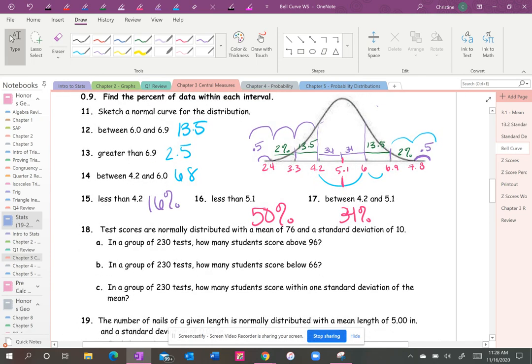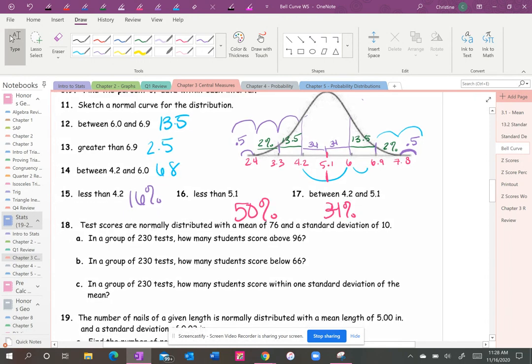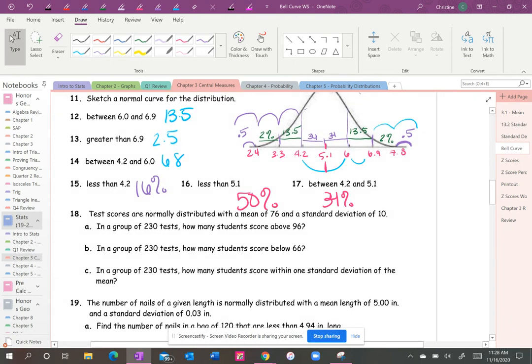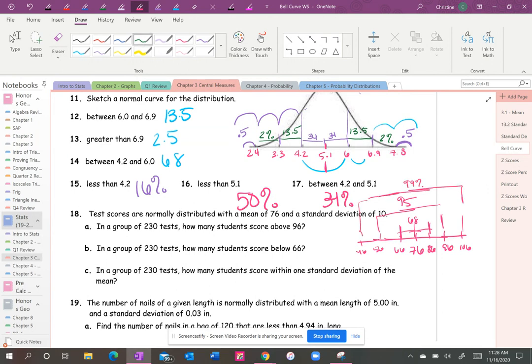Okay, now for this one you don't necessarily need to draw a graph, but I would just to figure out what's going on. It says test scores are normally distributed with a mean of 76, so I'm just going to sketch a mean of 76 and a standard deviation of 10. So you don't really need to even draw the curve if you don't want to, but you could say this is 68, here's your 95, and then that's 99 of your data.